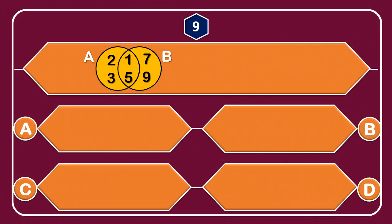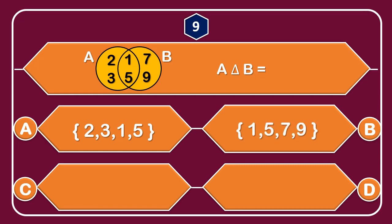Question number 9: If A union B — options: A: set of {2, 3, 1, 5}, B: set of {1, 5, 7, 9}, C: set of {2, 3, 5, 7, 9}.